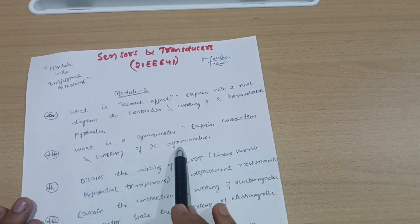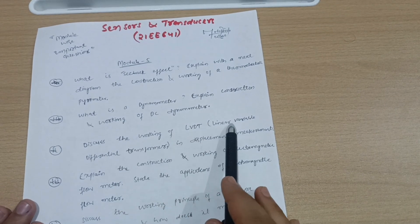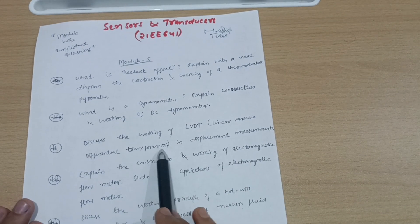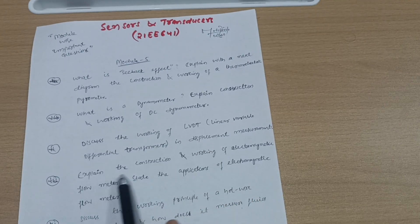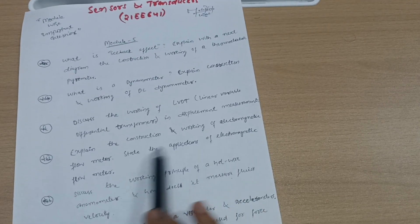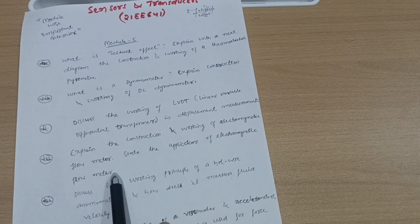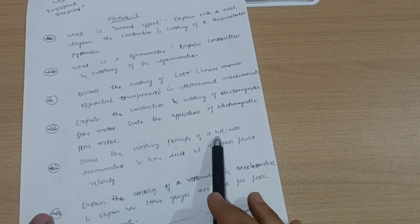Discuss the working of LVDT - Linear Variable Differential Transformer in displacement measurement. Explain the construction and working of electromagnetic flow meter, state the applications of electromagnetic flow meter, and discuss the working principle of hot wire anemometer and how does it measure fluid velocity.